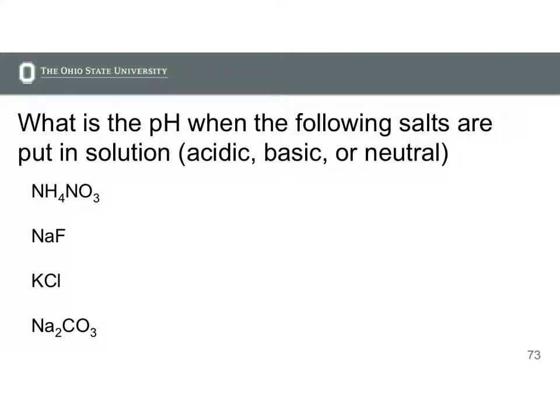Here are a few more examples of placing salts in water and determining if the pH is acidic, basic, or neutral. Let's look at our first example: ammonium nitrate. When we put ammonium nitrate in solution, it completely dissociates to form NH4+ and NO3-.